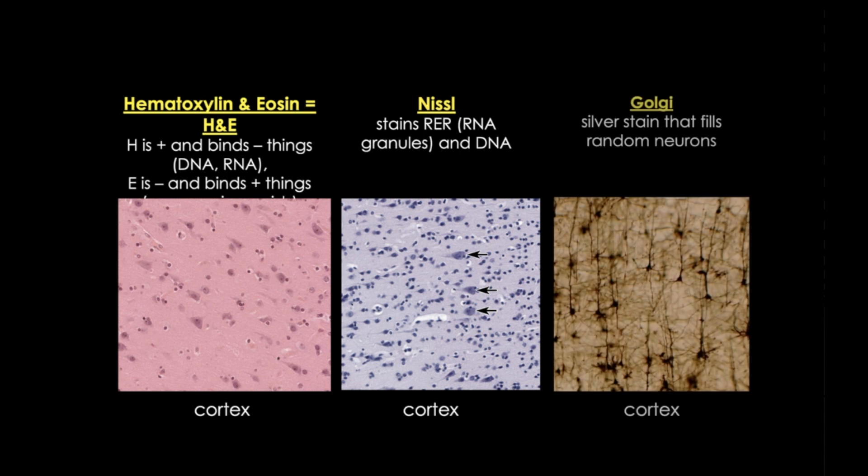Another special stain that you'll see in lab is the Golgi stain. This is a silver stain that starts a silver chromate reaction in neurons that fills the neurons entirely, so you can see the axon, dendrites, and cell body. The cool part about the Golgi stain is that it fills neurons randomly, so this makes imaging easier.